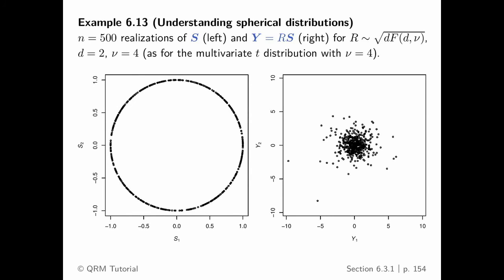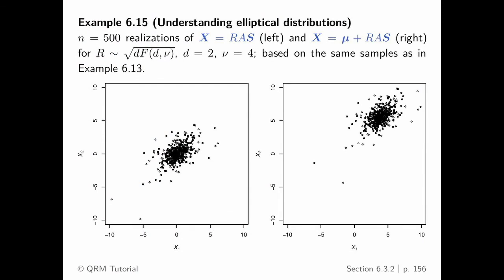Very beautiful results. Going back to the slide: we started with S uniformly on the sphere, multiplied by the radial part to get spherical distributions — and a special case of the t is already obtained this way. Then applying the location-scale transform with the Cholesky factor turns the spherical shape into an ellipsoid sample cloud, and shifting with mu moves it to another location. And this looks now much closer to real data — this is actually a multivariate t sample, constructed through the idea of spherical distributions.